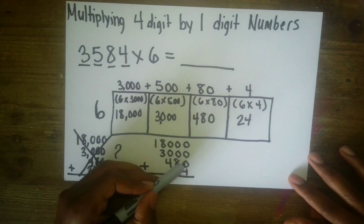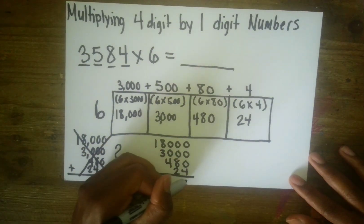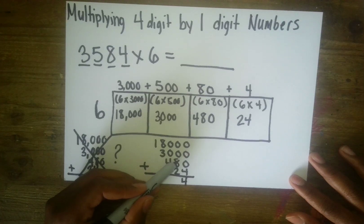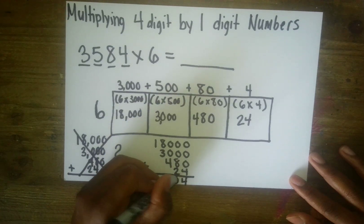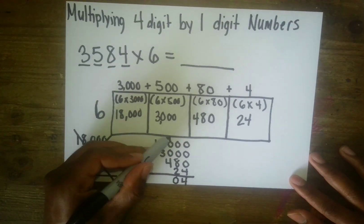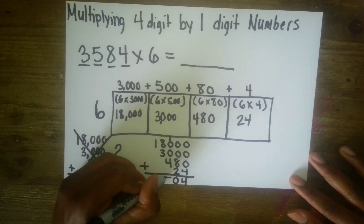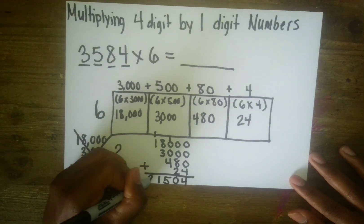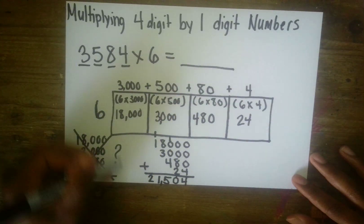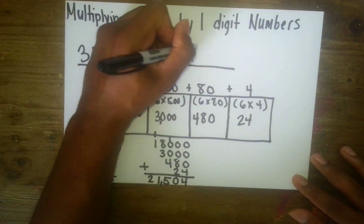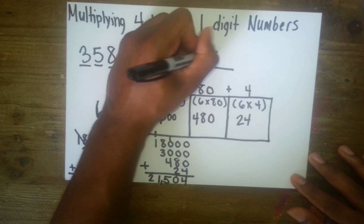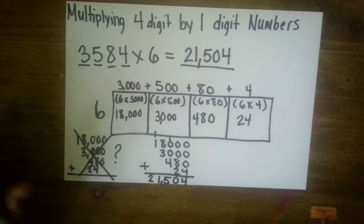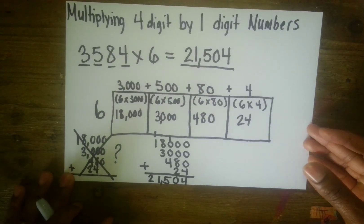Let's go ahead and add this up. Four plus zero plus zero plus zero plus zero plus zero is four. Two plus eight is ten, plus zero plus zero — I put my zero here and carry the one. Four plus one is five. Eight plus three is eleven, and one plus one is two. So our answer is 21,504. Thanks for joining and I will see you next time.